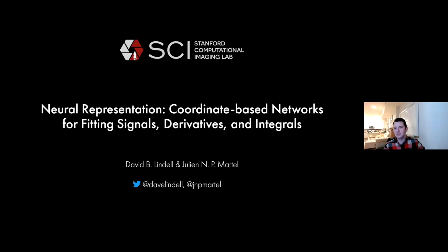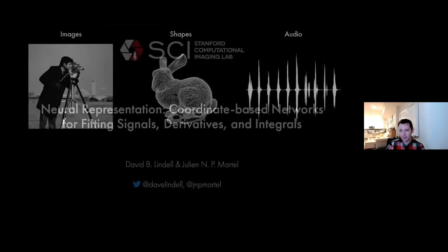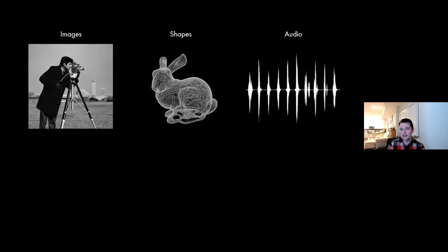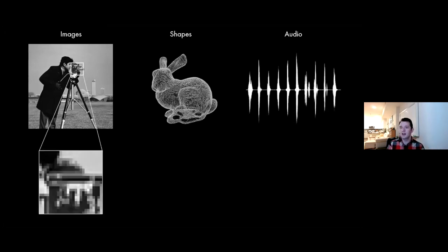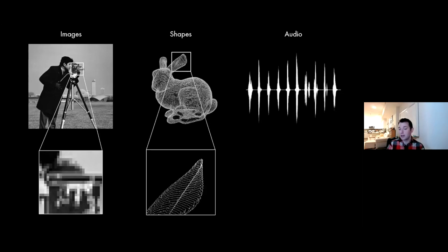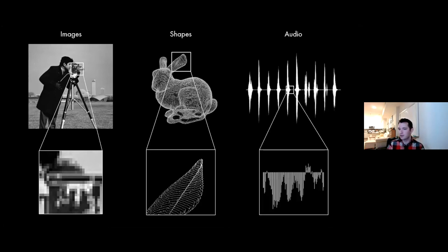This talk is about an emerging way to represent signals as the output of simple neural networks. We'll go over recent work on neural representations and coordinate-based networks to represent signals, their derivatives, and integrals. Commonly, discrete representations are used — images as pixel grids, shapes as point clouds, and audio as discrete amplitude samples.